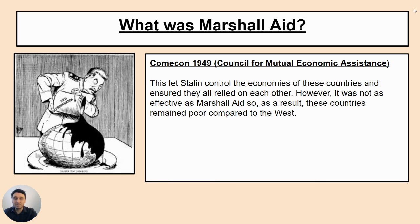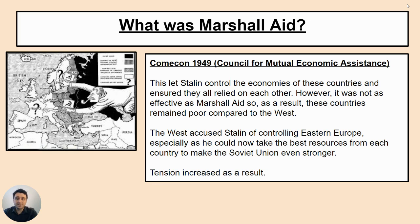This let Stalin control the economies of these countries and made sure they all relied on each other — keeping them friendly because they needed each other's resources. However, this was not as effective as simply giving money to countries and letting them grow their own way, so the countries remained poor compared to the West. The West continued to accuse Stalin of controlling Eastern Europe, and as a result of Marshall Aid and Comecon being set up, tension continued to increase between the two sides.